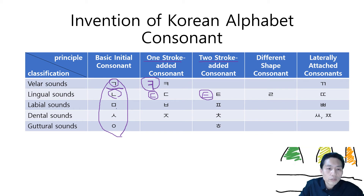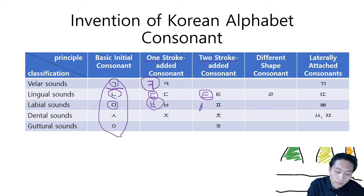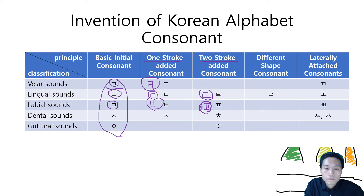Let's look at the labial sound 미음. 미음 is the shape of the lips. When you add strokes, this consonant is called 비읍. And when you add two more strokes, we get 피읖. These are all labial sounds.